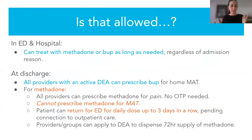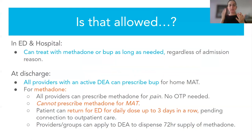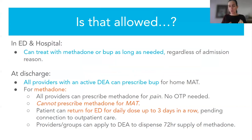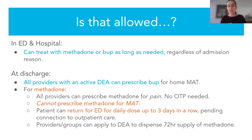The question we always get is: is this allowed? I thought methadone could only come from an opioid treatment program, and I thought buprenorphine needed an X waiver. In the emergency department and in the hospital, people can get treated with methadone or buprenorphine for as long as they're there. If you're in the hospital for six weeks for IV antibiotics, you can get methadone or buprenorphine regardless of certification for that entire period. At discharge, anybody with an active DEA can prescribe buprenorphine for home treatment. The X waiver is gone — a huge change.